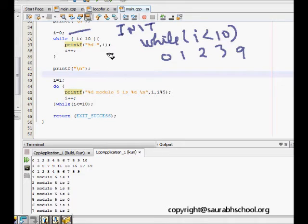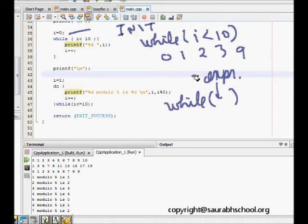When i becomes 10, 10 is not less than 10, so it will print till 9. This while loop is very similar to for loop. Here there is an expression tested for truth. If it is true, the body of the while loop is executed. This is the initialization part, and this is the increment part happening in the body. The initialization happens before the while loop body.